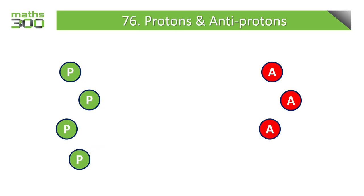Here we have an example with four protons and three antiprotons. This allows us to create three zero pairs, leaving us with the end result of a single proton.